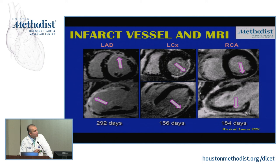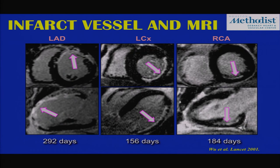Examples of patients with known myocardial infarction imaged by CMR six months to almost a year after their acute presentation: a patient with a known infarct-related artery in the LAD territory shows an area of hyper-enhancement in the anterior wall; a patient with a known RCA infarct shows hyper-enhancement along the inferior wall corresponding to RCA territory. Uniquely, we can not only identify the presence of infarct but quantitate its extent.